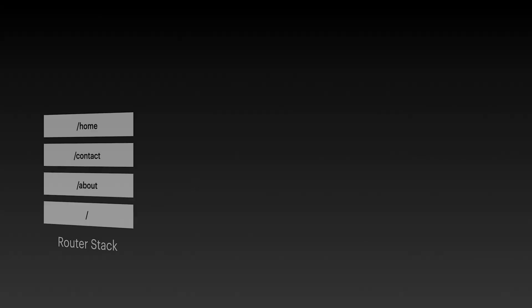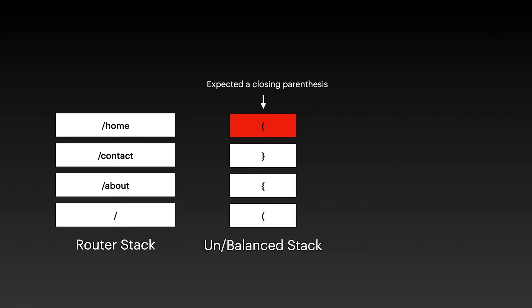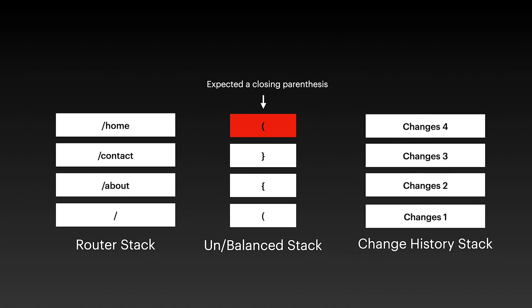Your app router is an example of a stack of paths you visited. Whenever your code editor tells you that you are missing a closing parenthesis on line 13, it's probably using a stack to track all your parentheses. Whenever you press Ctrl+Z, you may be popping from a stack of saved tracked changes or progress.